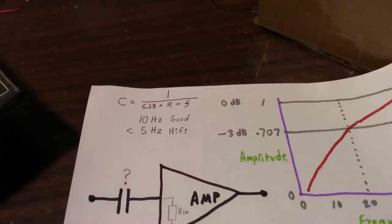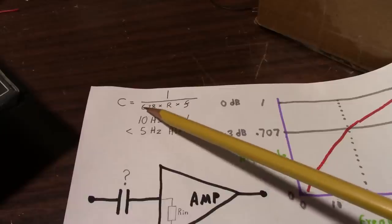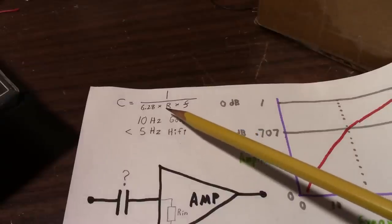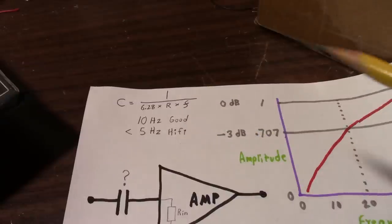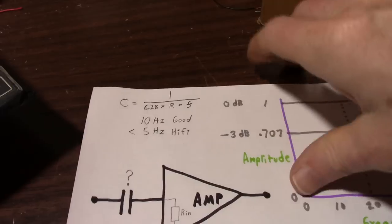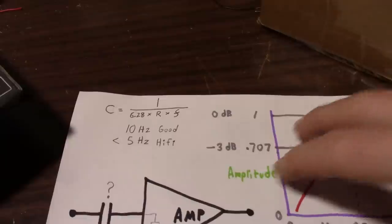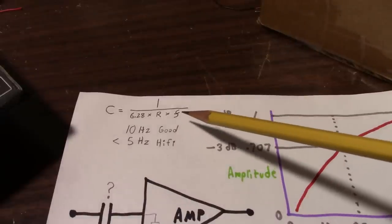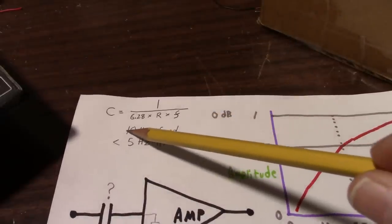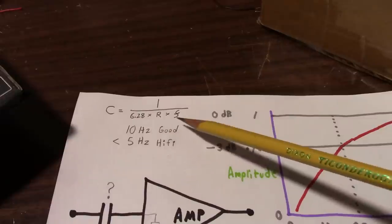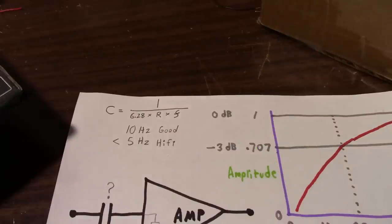Okay, so I have what I need to calculate the value of the capacitor. So I can plug in 6.28, which is again 2 pi. 15k, that's the resistance value of this filter. Again, this is what the filter equivalent circuit is. And our frequency, I said we'll use 10 hertz. That'll be good enough for this amplifier to improve its response. So when I ran the numbers in the calculator, I come up with 1 microfarad.